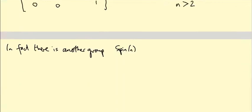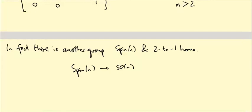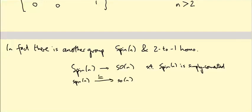So SO(n) is not simply connected but it's not far off. In fact, there is another group called Spin(n) and a two-to-one homomorphism from Spin(n) to SO(n) such that Spin(n) is simply connected. In particular, this means the Lie algebra of Spin(n) and the Lie algebra of SO(n) are isomorphic - they have the same Lie algebra, but the global topology of the groups is different. There will be a question about the case n equals 3, because Spin(3) turns out to be a very nice group called SU(2).